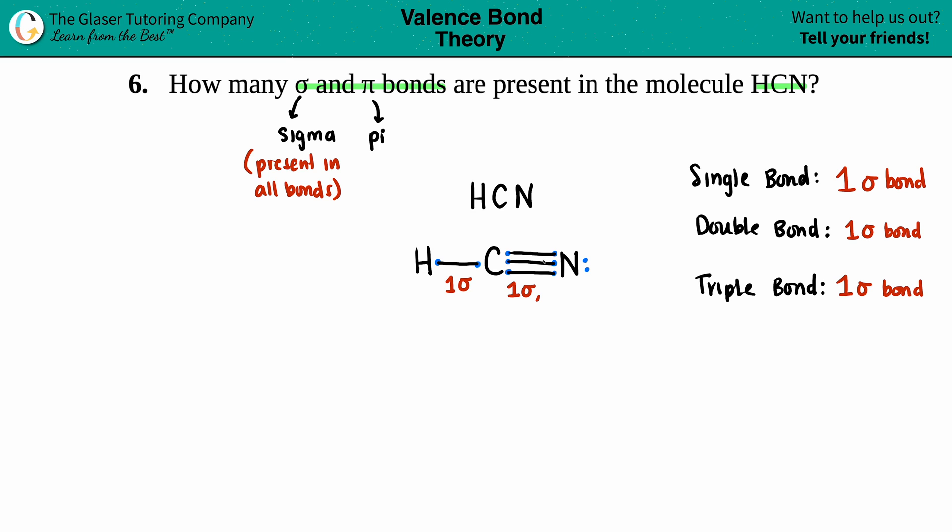So for example, if one of them is a sigma bond, well I got two more bonds here. So in a triple bond, the other two they're pi bonds. So for a triple bond you have one sigma and two pi bonds. This gets me the total of three, right? One plus two is three.